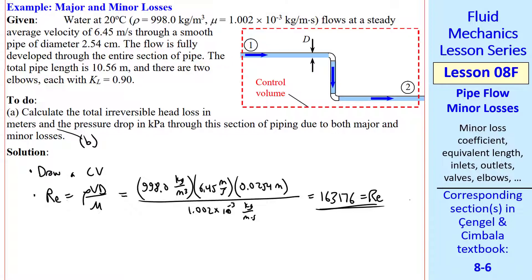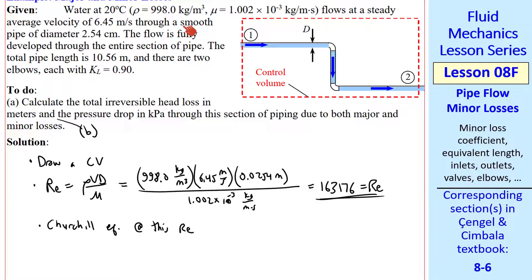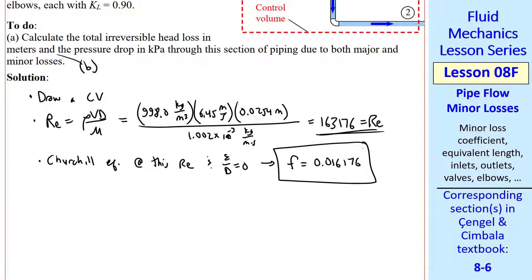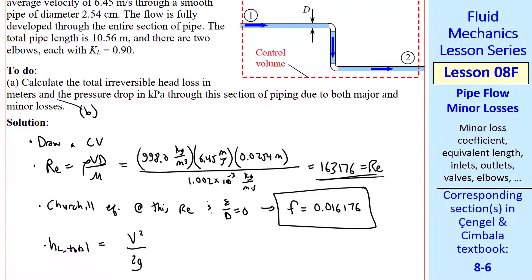I use the Churchill equation at this Re, and epsilon is 0, since it's a smooth pipe. I get F equal 0.016176. Since this flow has only one pipe diameter throughout, we'll use the simpler form of our HL total equation, which is V squared over 2G times the quantity F L over D plus sigma KL.